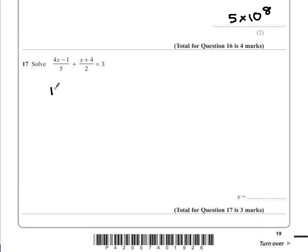So the top of our left fraction becomes 10 times 4x minus 1 divided by 5. Our next fraction would become 10 times x plus 4 divided by 2,